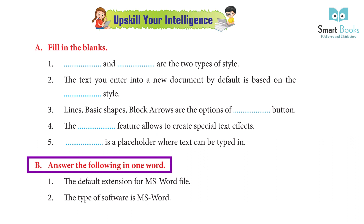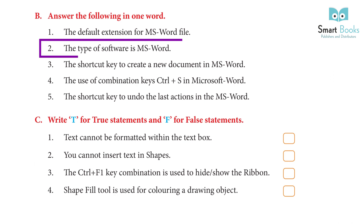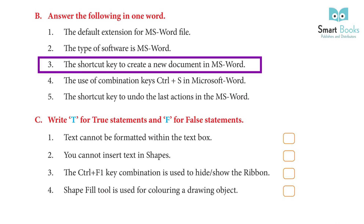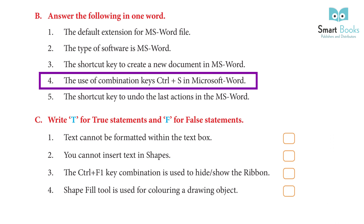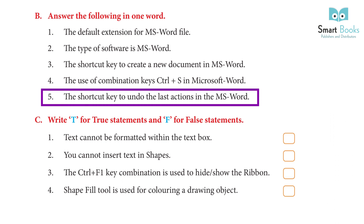Answer the following in one word. 1. The default extension of an MS Word file — Answer: .docx (Document). 2. The type of software MS Word is — Answer: Word processing program. 3. The shortcut key to create a new document in MS Word — Answer: Ctrl+N. 4. The use of the combination key Ctrl+S in Microsoft Word — Answer: Save. 5. The shortcut key to undo the last action in MS Word — Answer: Ctrl+Z.